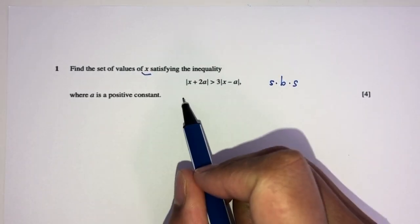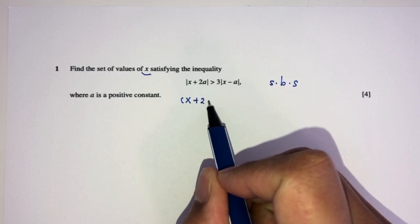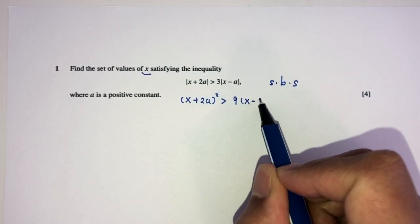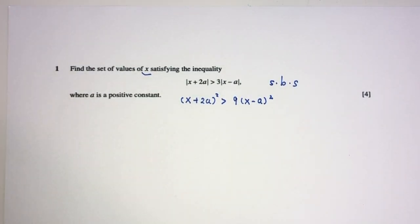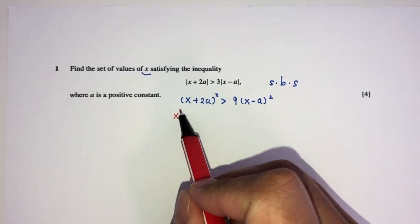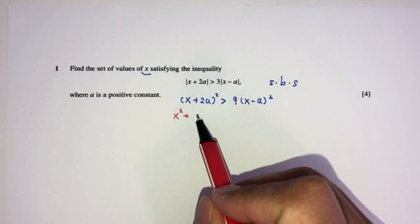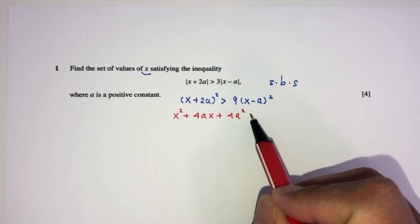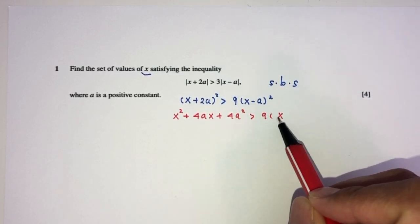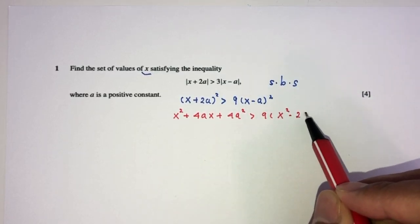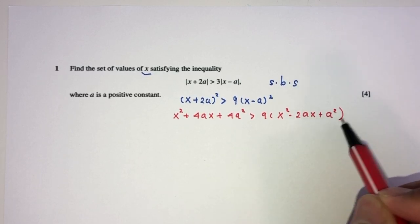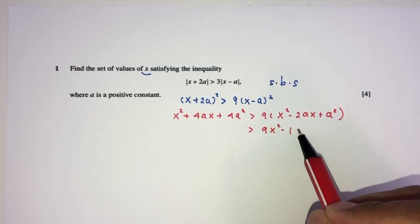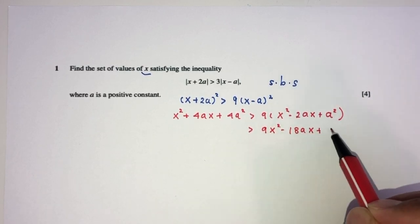You will have, expand this one, that will be (x+2a) squared first. The square, that will be (9x-a) squared. Now we can expand. That will become x² + 4ax + 4a². More than 9 times, expand, you have x² - 2ax + a². Expand the brackets. You will have 9x² - 18ax + 9a².